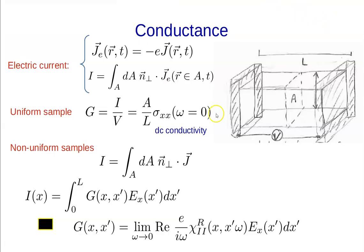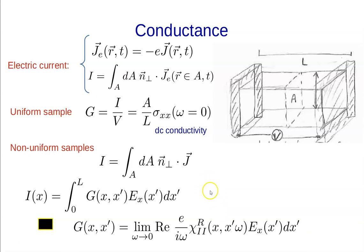So we now understand how the conductance for non-uniform samples depends on the retarded current-current correlation function. The conductivity has current-density–current-density correlation functions; integrating over the areas yields current-current correlation functions. The next class will apply this to the Anderson model and examine transport in that model. That finishes our two classes on linear response theory — one on the dielectric response function and this one on transport properties. See you next class.